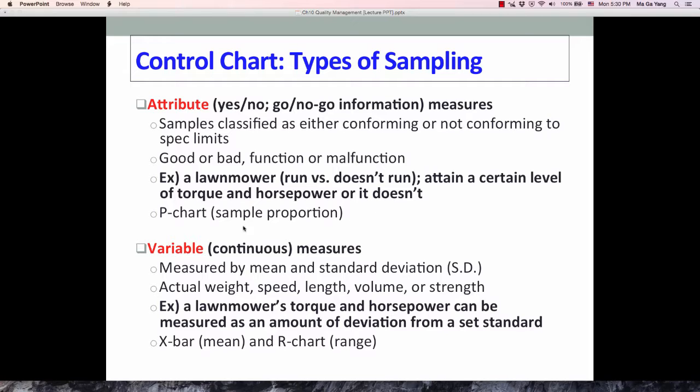We will focus on variable measures, which are continuous measures. These processes include the mean and standard deviation because it measures actual weight, speed, length, volume, or strength. For example, a lawnmower's torque and horsepower can be measured as an amount of deviation from a set standard. In these variable measures we use X-bar, the mean, and R-chart, the range.